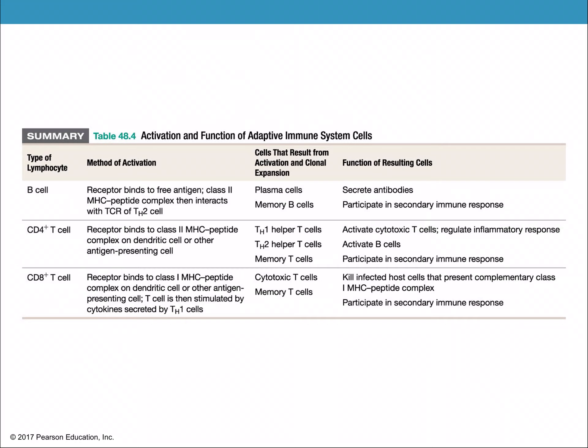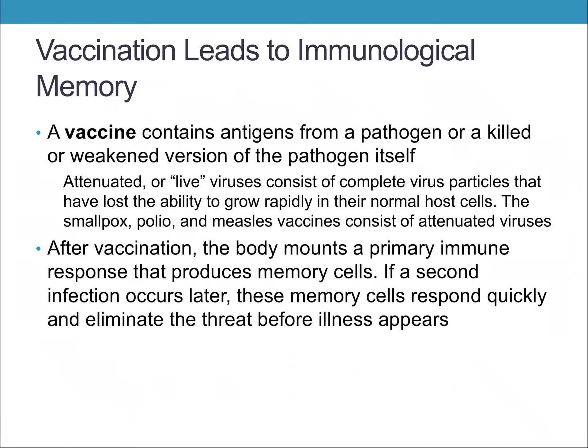This table shows the different lymphocytes, their mode of activation, the cells that result from them, and the function of those resulting cells — you can use this as a reference. We can get this process to work on its own by using vaccines. A vaccine contains antigens from a pathogen or a killed or weakened version of the pathogen itself.